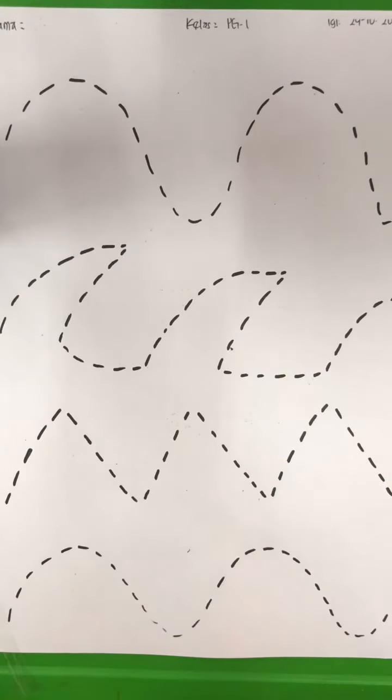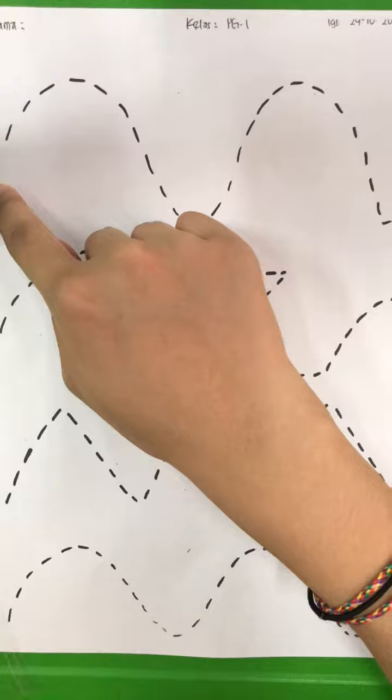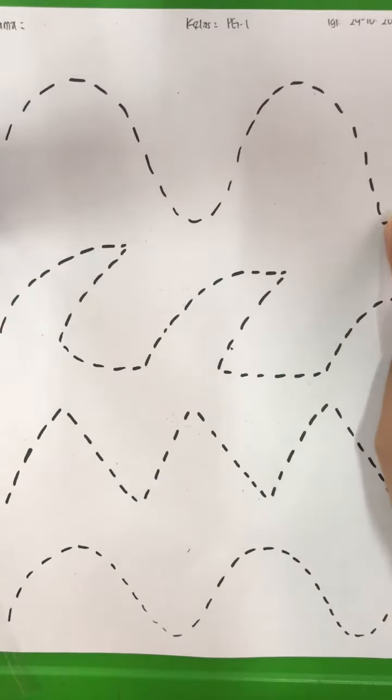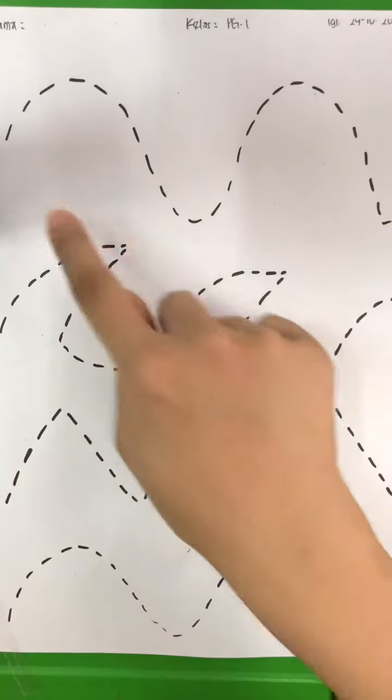After that, teacher wants you to take out one of your crayons. We are going to start tracing from this point to this point, follow the line.